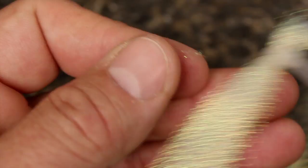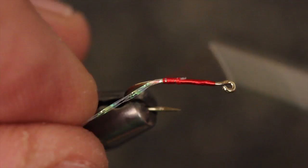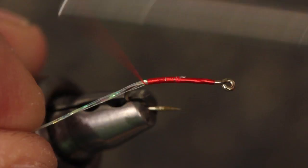I like to add just a little sparkle to the pattern with a few strands of crystal flesh. Secure the crystal flesh to the top of the hook and then snip it off at about a shank's length.